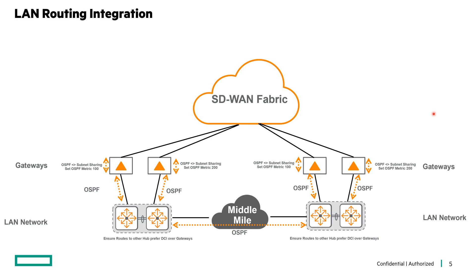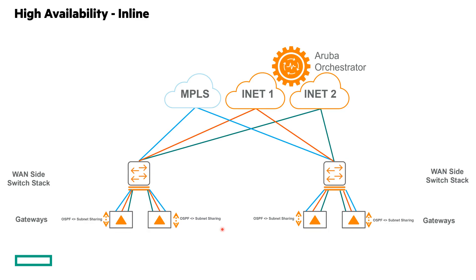Let's look at a common deployment scenario. Here we have two hubs with a back-end interconnect. For the inline deployment model, a high availability mode referred to as traditional HA is recommended. In this model, all of the various WAN transports terminate on each EdgeConnect gateway at the hub. With this design, each EdgeConnect will have direct access to each WAN transport, creating an effective forwarding path for SD-WAN IPsec tunnel establishment. This is different than edge HA, which is normally used at a branch, where the WAN transports terminate on only one of the edge connects and then are shared via edge HA. In this hub design, you'll notice we use a WAN switch stack to physically accept the handoff and then pass it to each SD-WAN gateway.